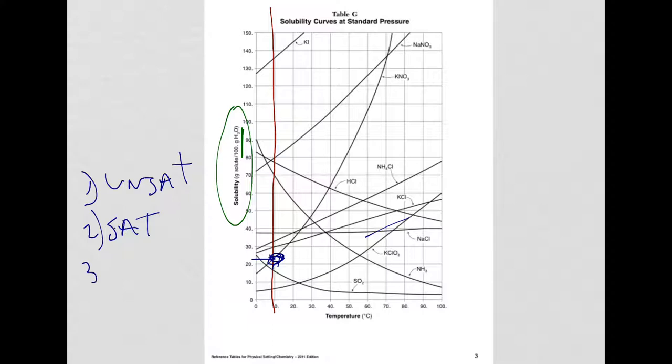25 grams of NaCl, I'm looking at the same point now, just looking at the different lines. Here's NaCl, I just got to follow it, it would be up here. So again, unsaturated. And finally for choice 4, 25 grams of NaNO3. NaNO3 is way up here, so again, unsaturated.